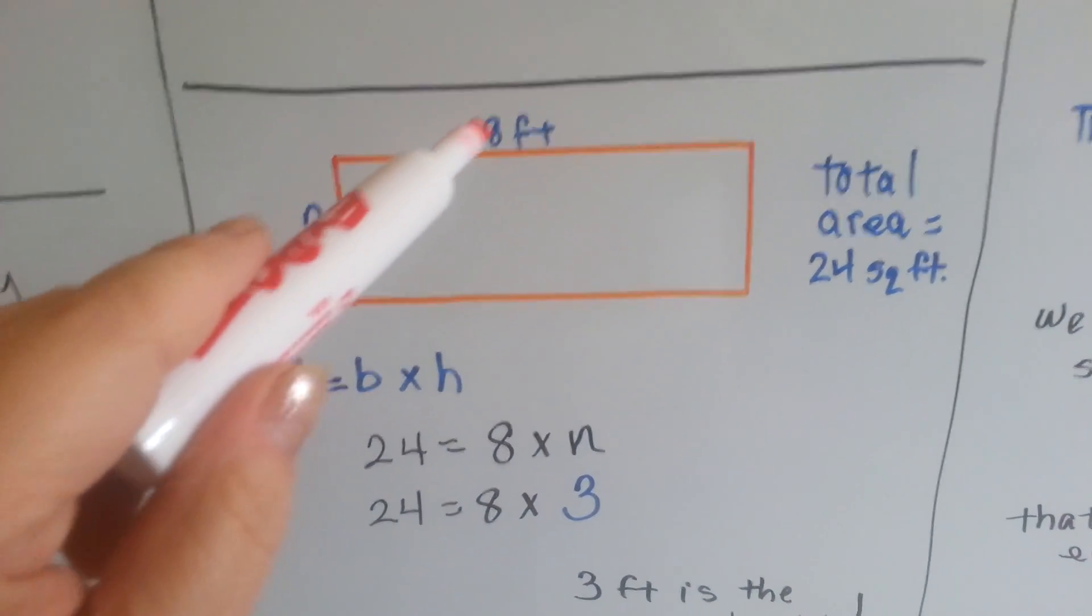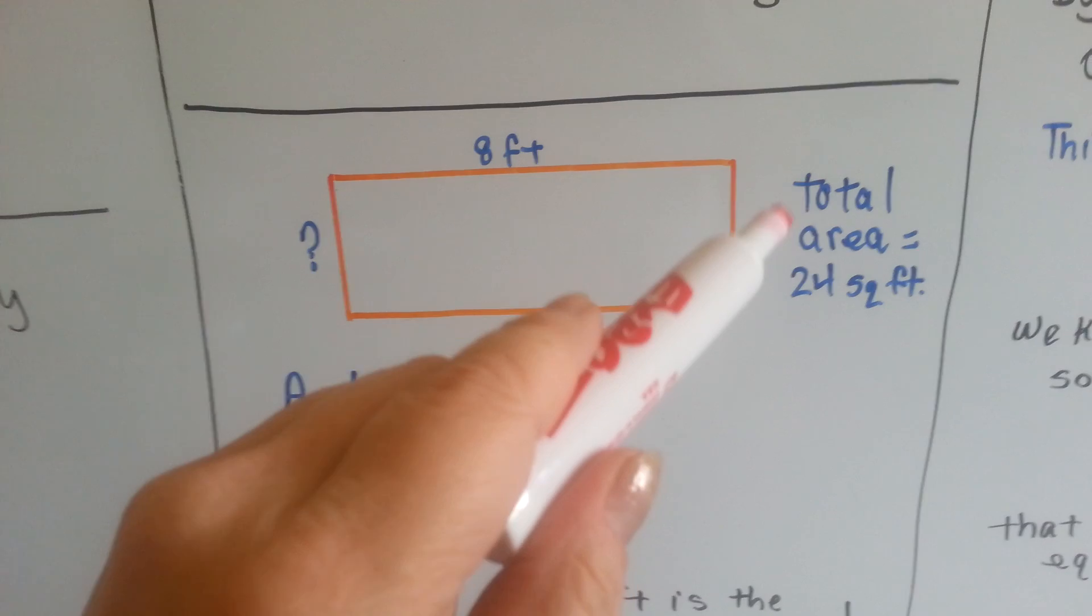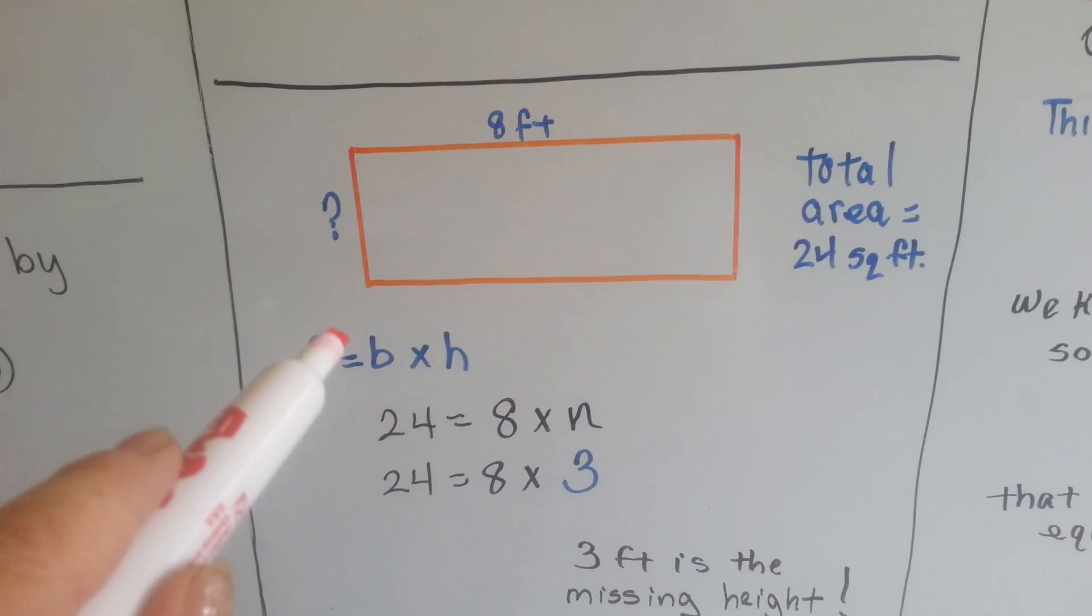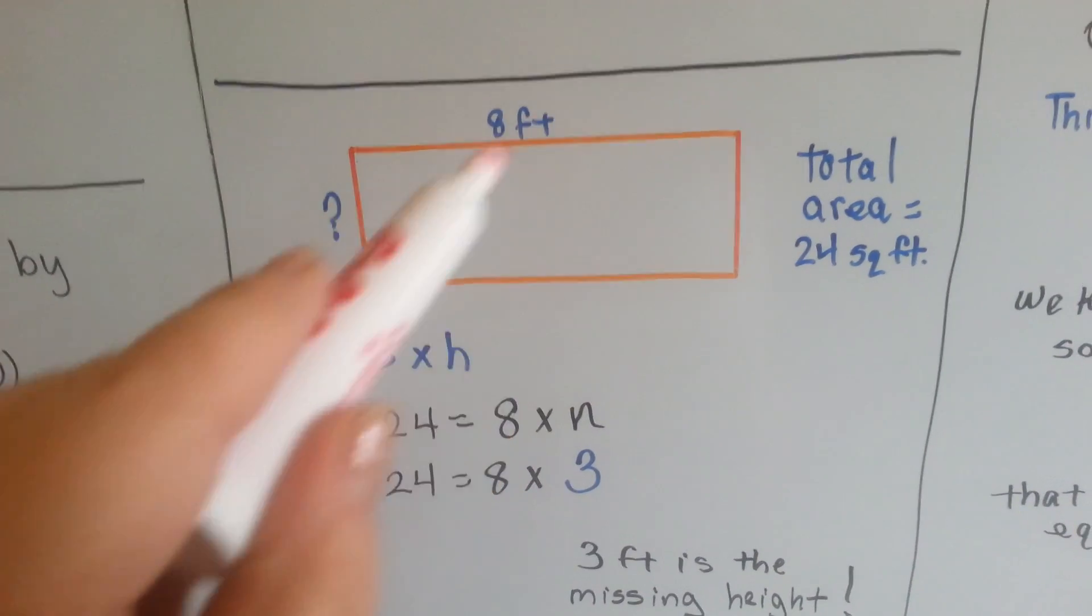How about this one? This is 8 feet. The total square area is 24 square feet. We use area equals base times height. We have the base.